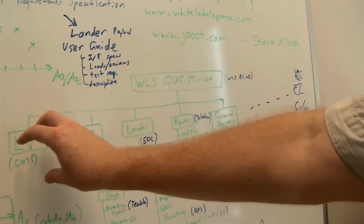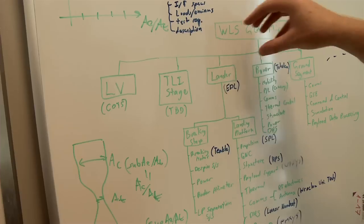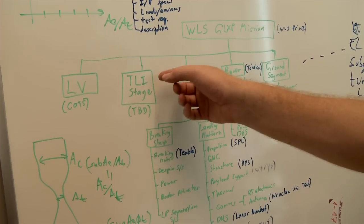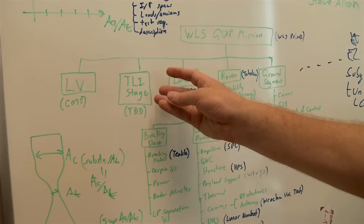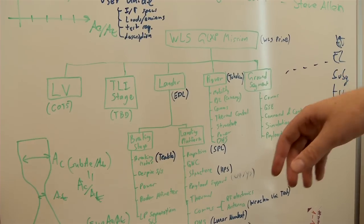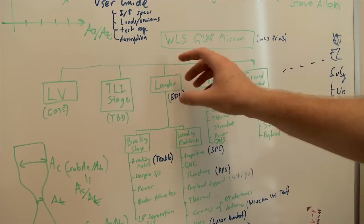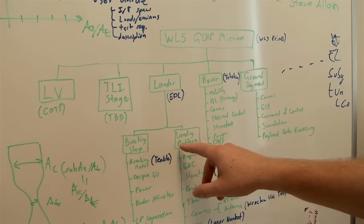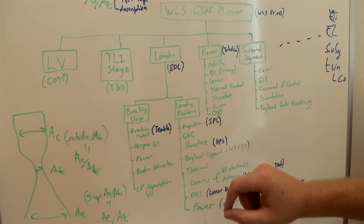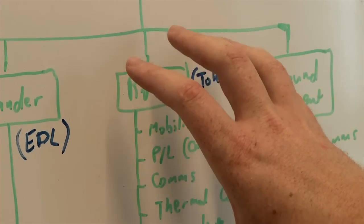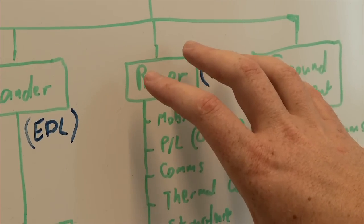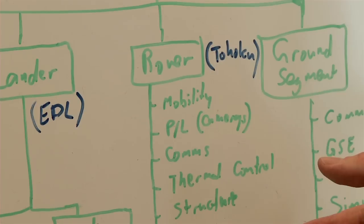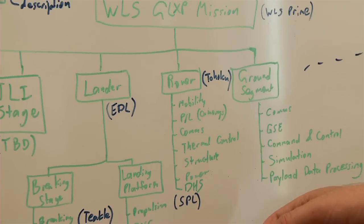Underneath the prime contract there's a series of other elements which need to be purchased or developed for the mission. So the launch vehicle would buy off the shelf, a translunar injection stage we could buy it off the shelf or maybe develop it ourselves. The lander is one of the key developments of the mission. We have a two-stage landing system with a breaking stage and a landing platform. The rover will be developed in Japan led by Tohoku University in the city of Sendai, and the lander development is being led here at AOES in the Netherlands.